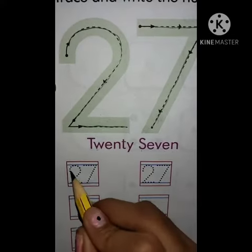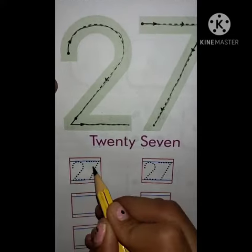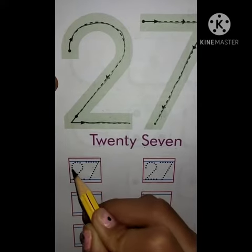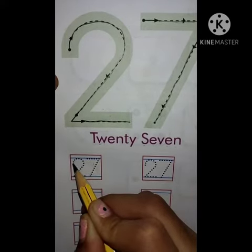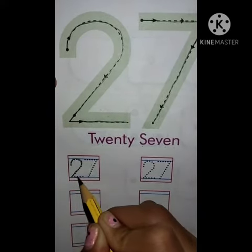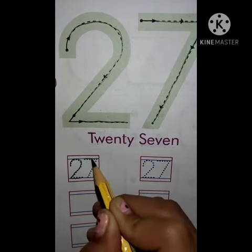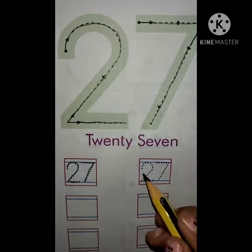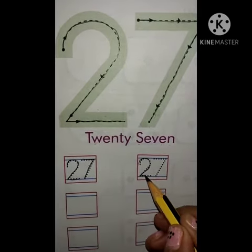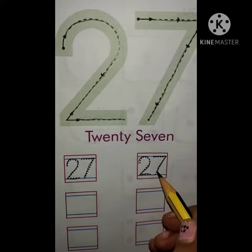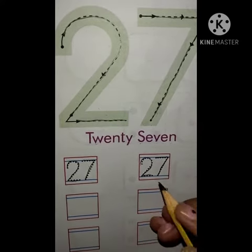Now we will write number 27 with tracing. So let's start: 2, 7, 27. Again: 2, 7, 27.